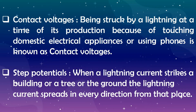Let's talk about step potentials. When lightning strikes the earth's surface, it spreads in every direction from that place. If you are near such an earthing point, you also get a shock because lightning enters through one leg and earths through the other. There is greater damage to cattle than humans in this phenomenon, because the distance between four legs increases the voltage difference across the body.